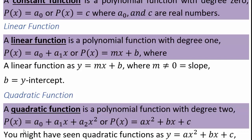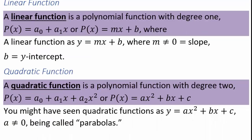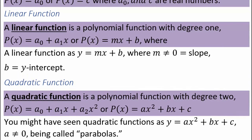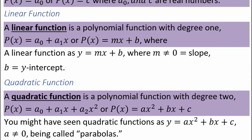And b is called the y-intercept. A quadratic function is a polynomial of degree 2, so it would be like some constant plus some constant times x plus some constant times x squared. You may have seen it as ax squared plus bx plus c. We call it a quadratic function, or a polynomial function of degree 2, and a, b, and c are called its coefficients.